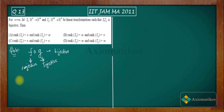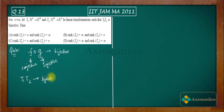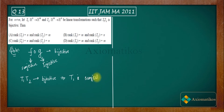We apply the same thing to our linear transformations T1 and T2. Since their composition is bijective, we can conclude that T1 is surjective — that means onto — and T2 is injective.